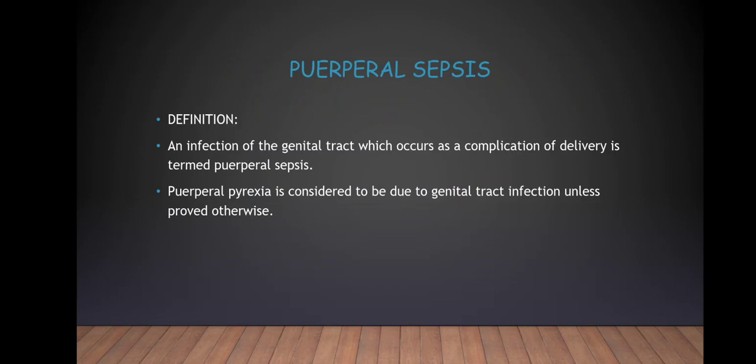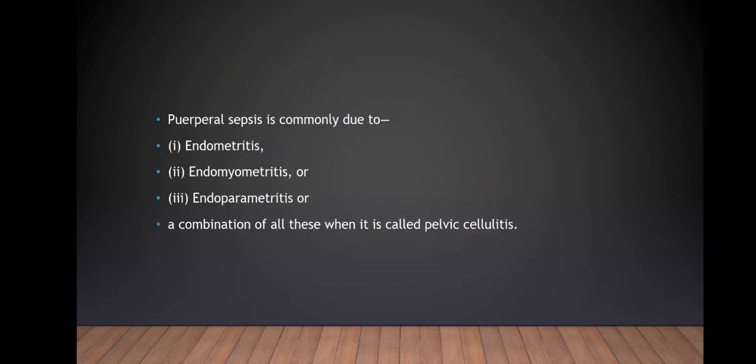Puerperal sepsis is defined as an infection of the genital tract which occurs as a complication of delivery. Puerperal pyrexia is considered to be due to genital tract infection unless proved otherwise. Puerperal sepsis is commonly due to: 1. Endometritis. 2. Endomyometritis. 3. Endoparametritis. The combination of all these is called pelvic cellulitis. Either it affects just the endometrium (endometritis), the endometrium and myometrium (endomyometritis), or all three layers of the uterus (endoparametritis).